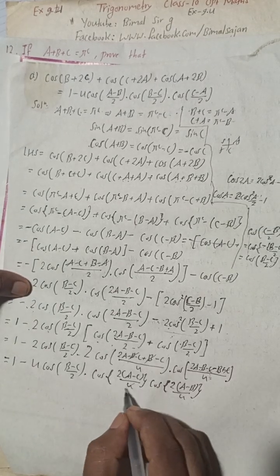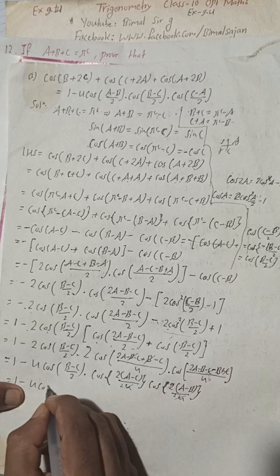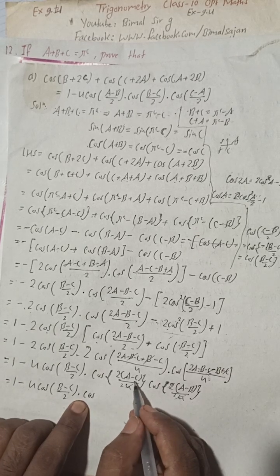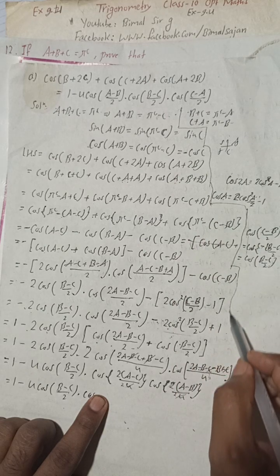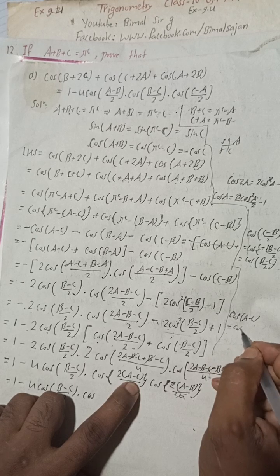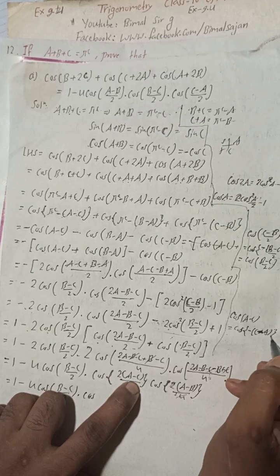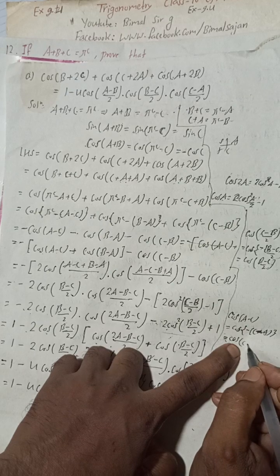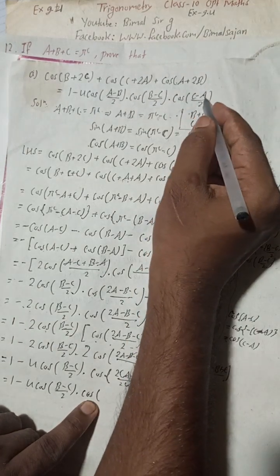After simplification, we get 1 − 4cos((b−c)/2) · cos((a−c)/2) · cos((a−b)/2). Since cos(a−c) = cos(c−a) by the even property of cosine, we can write cos((c−a)/2).